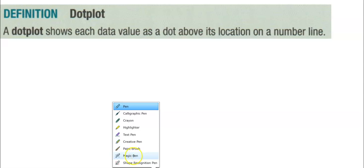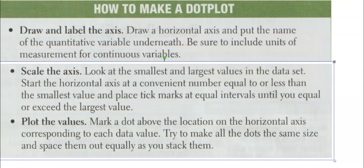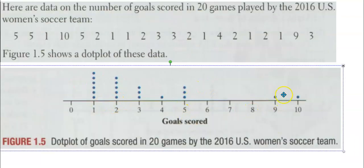All right, so let's talk about a dot plot. A dot plot shows us each data value as a dot above its location on a number line. Literally, a dot plot is going to have dots above a location on a number line like this.